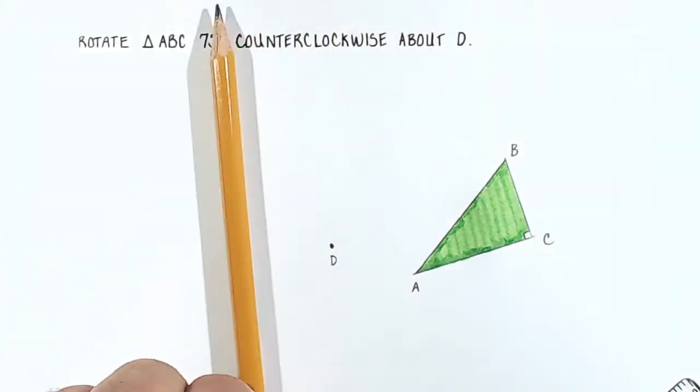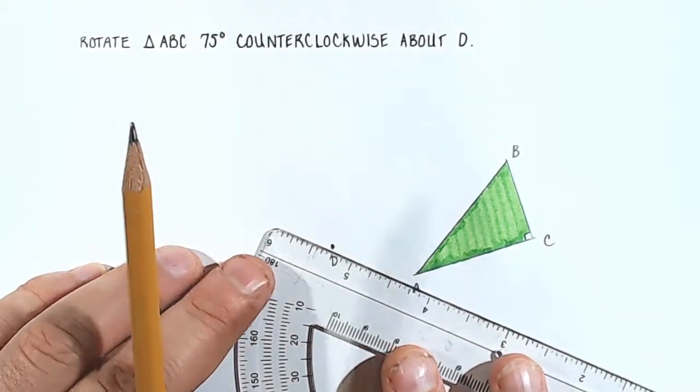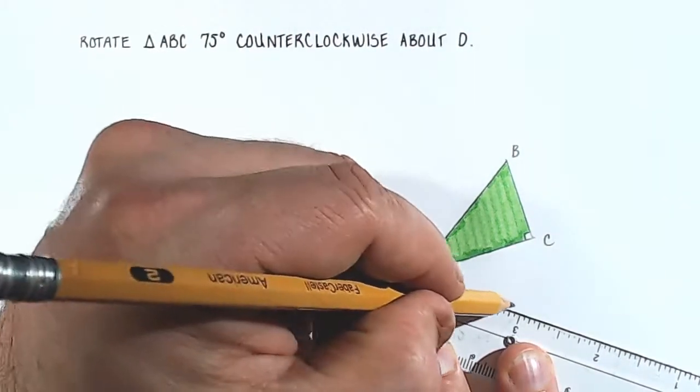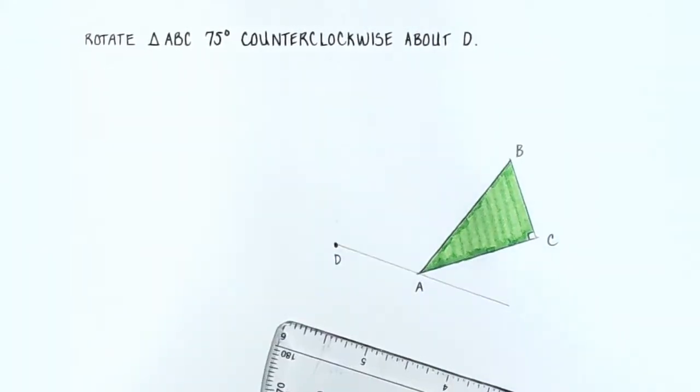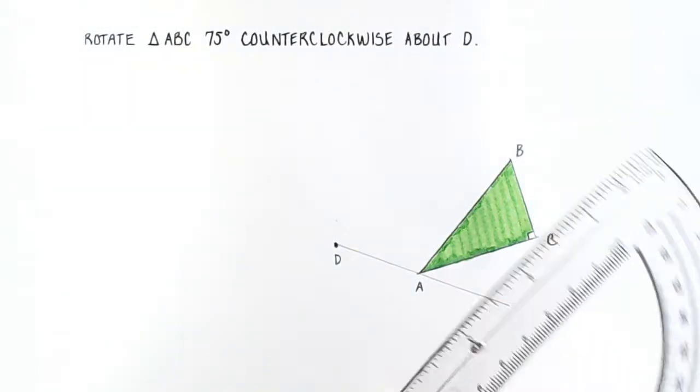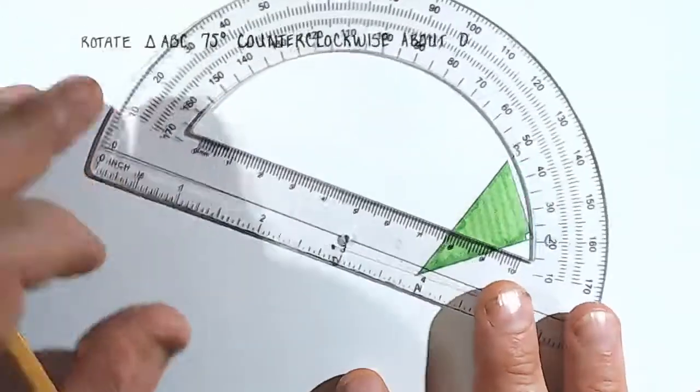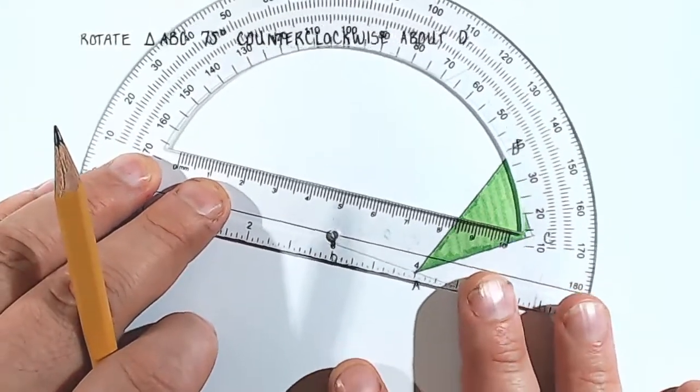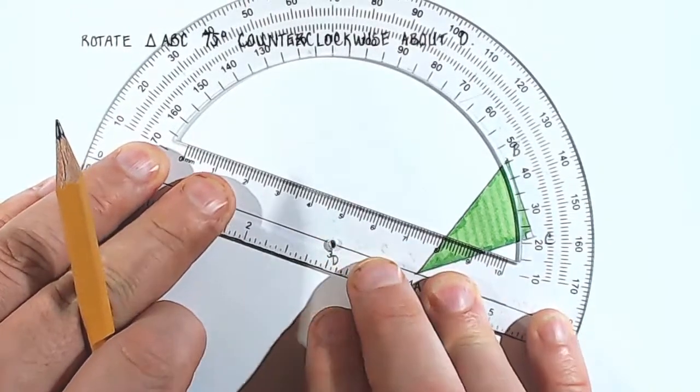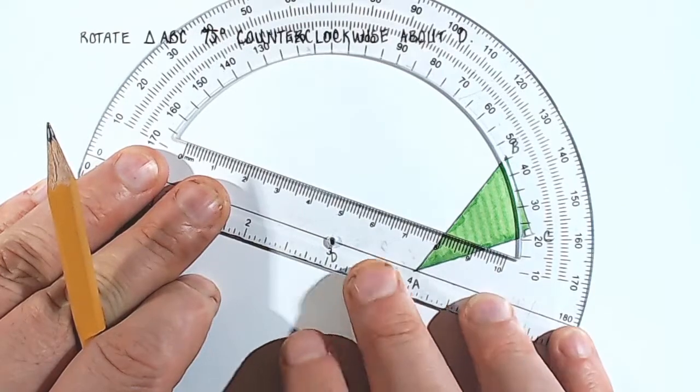So a counterclockwise rotation would look like this. And what we're going to do is connect points D and A and draw a line segment like this, passing through point A and point D. And now we want to find out what 75 degrees looks like. So take your protractor and center this little hole here over point D and make sure that your guideline is centered directly on top of the line segment that you just drew. Take your time with this. This is where the error typically gets introduced.